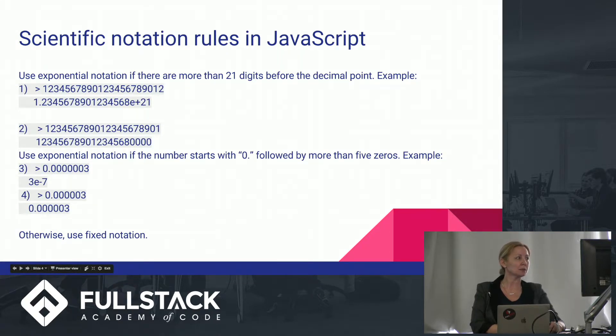So we can summarize rules for converting number into scientific notation by JavaScript as follows. JavaScript uses exponential notation if there are more than 21 digits before the decimal point, like in the first example. The number in second example is only 20 digits long, but it's still not exactly the way we would expect it to be. But that's a whole different issue with JavaScript and numbers.